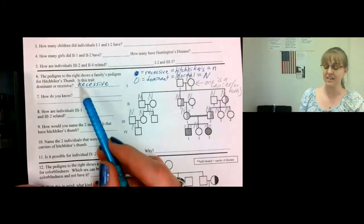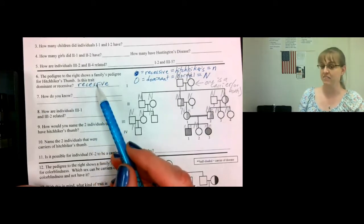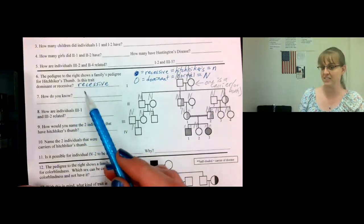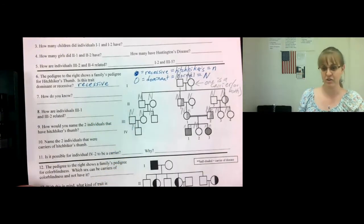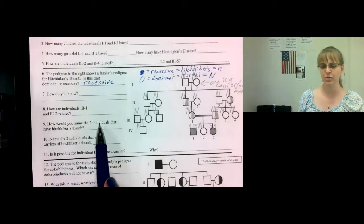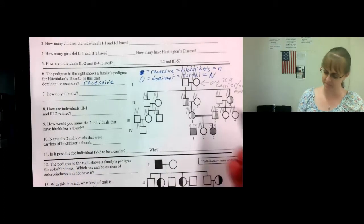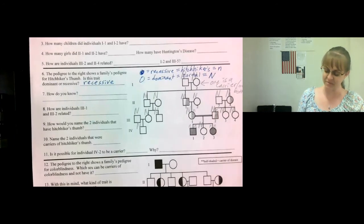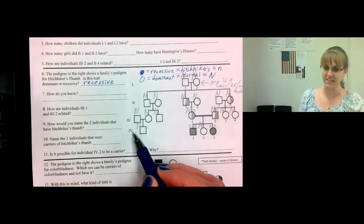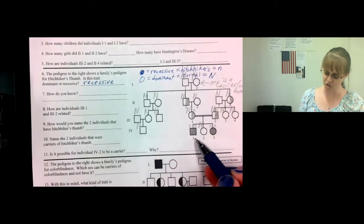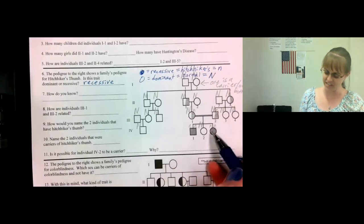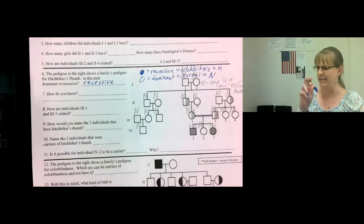Because hitchhiker's thumb is not sex-linked. If it was, we'd have a lot more information about who passed it on. But it's not sex-linked, so it's much more difficult to determine who is the carrier. For number nine, it asks you to name the two individuals that have hitchhiker's thumb. That would be these two. Name them, in other words, give them the number and letter designation. So IV-1 and IV-3 would be their names.